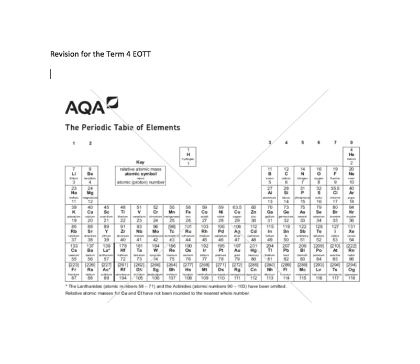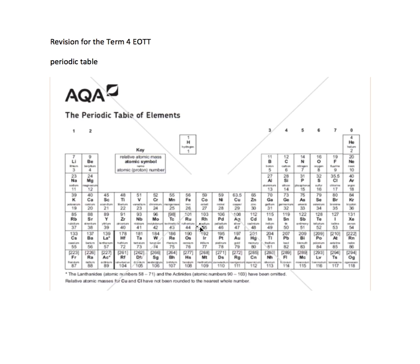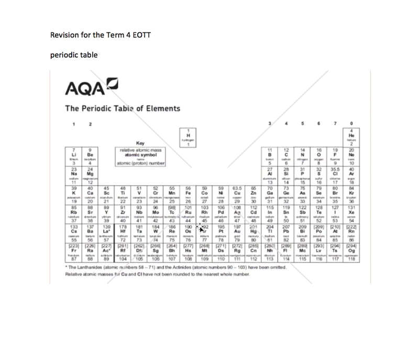The first thing we did together was the periodic table, and here is the periodic table. You need to know the history of the periodic table from Dalton and Mendeleev through to the current table, and the guesses he made and how they have come to be proven correct in terms of where elements belong even though we hadn't found them.